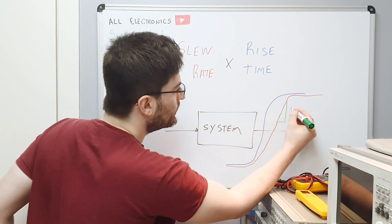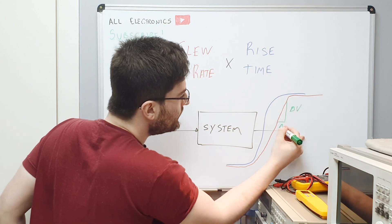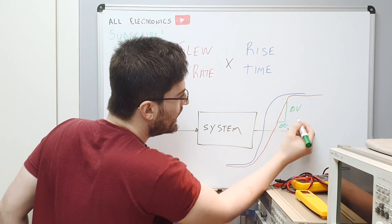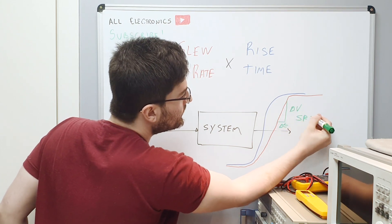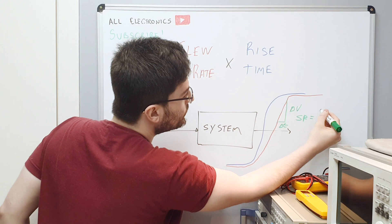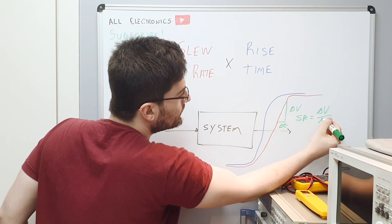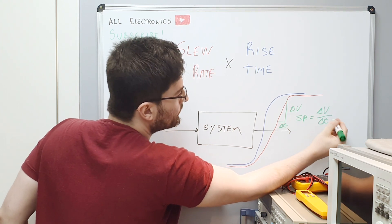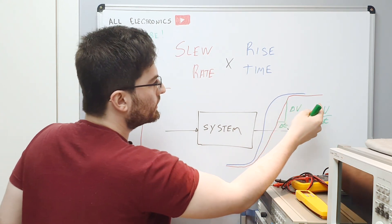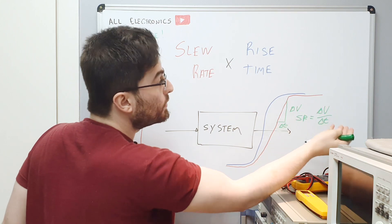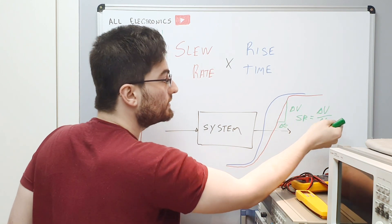So here you have delta V and here you have delta time. Slew rate is equal to delta V over delta time—a maximum change in voltage at a given time.